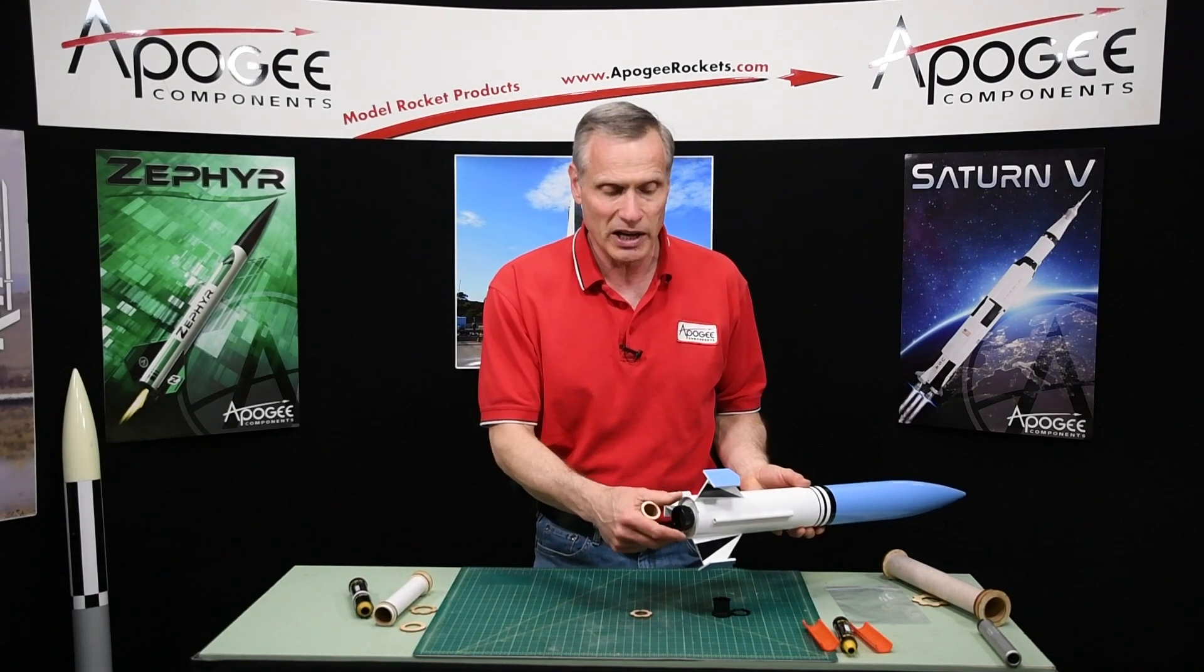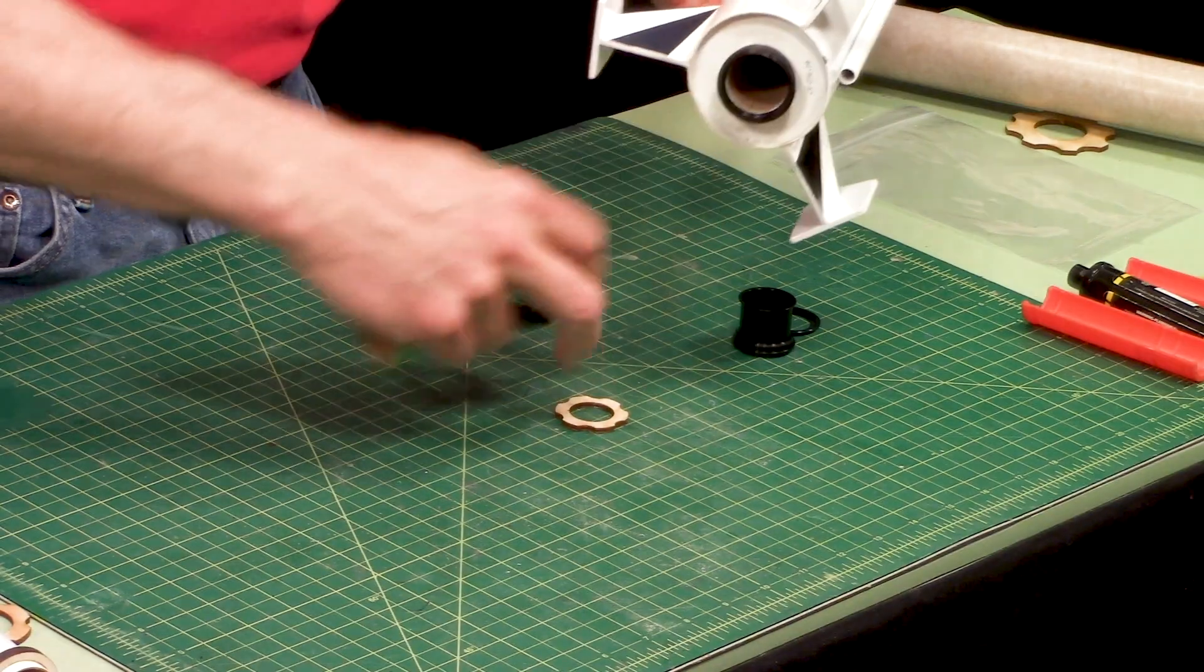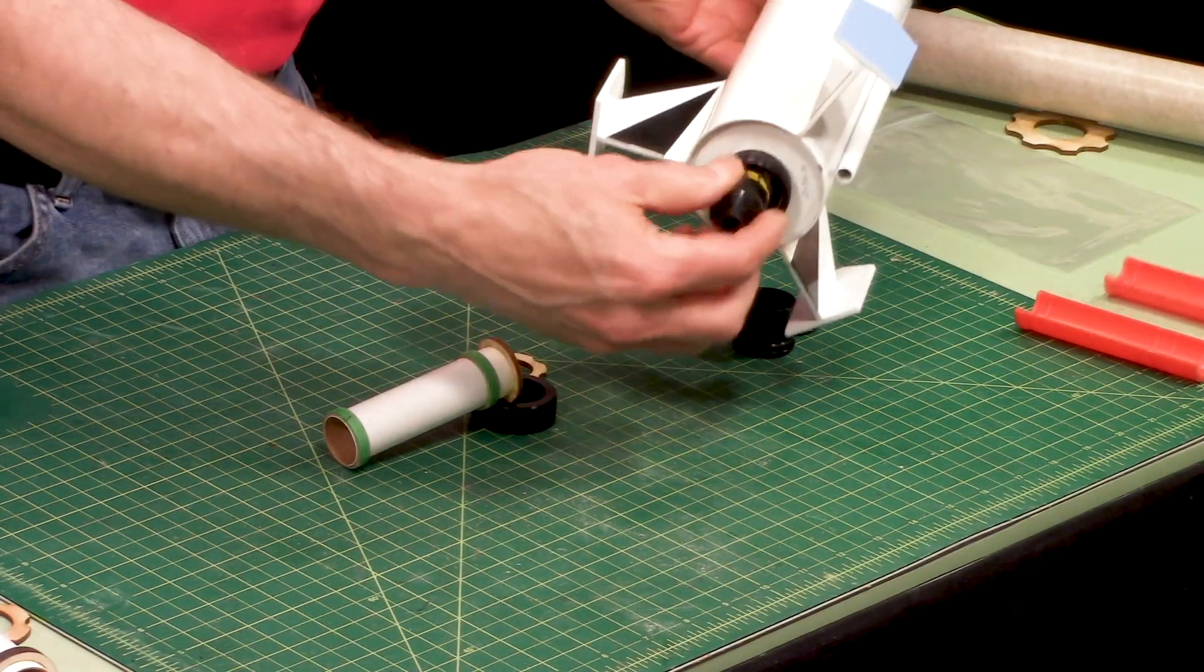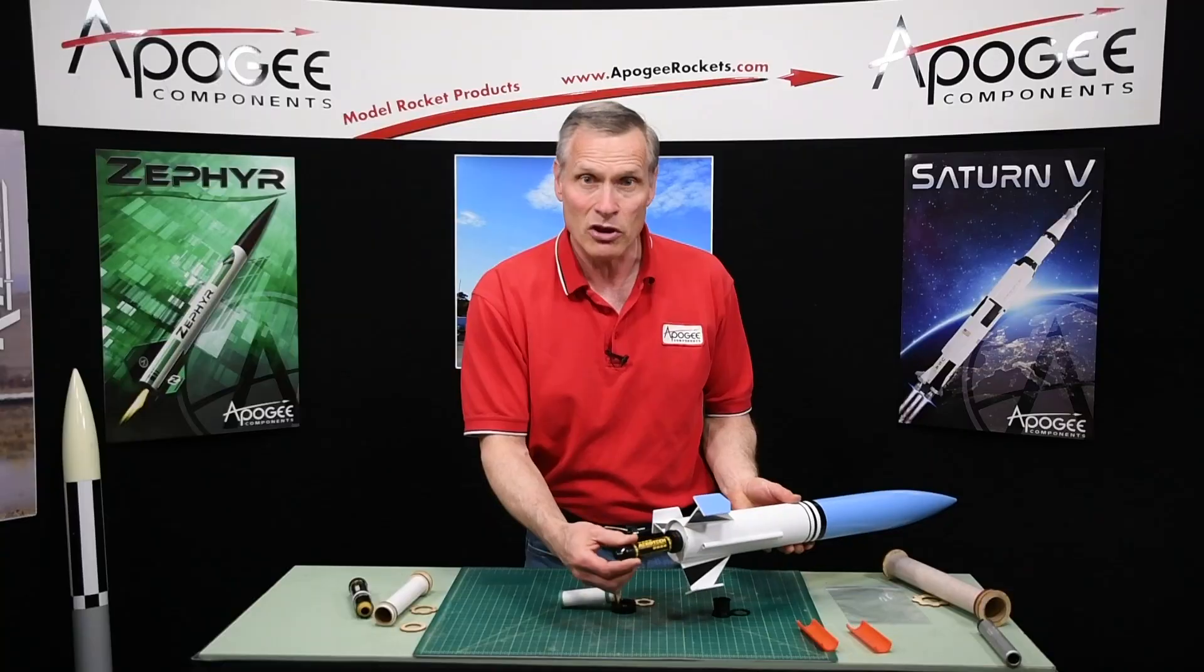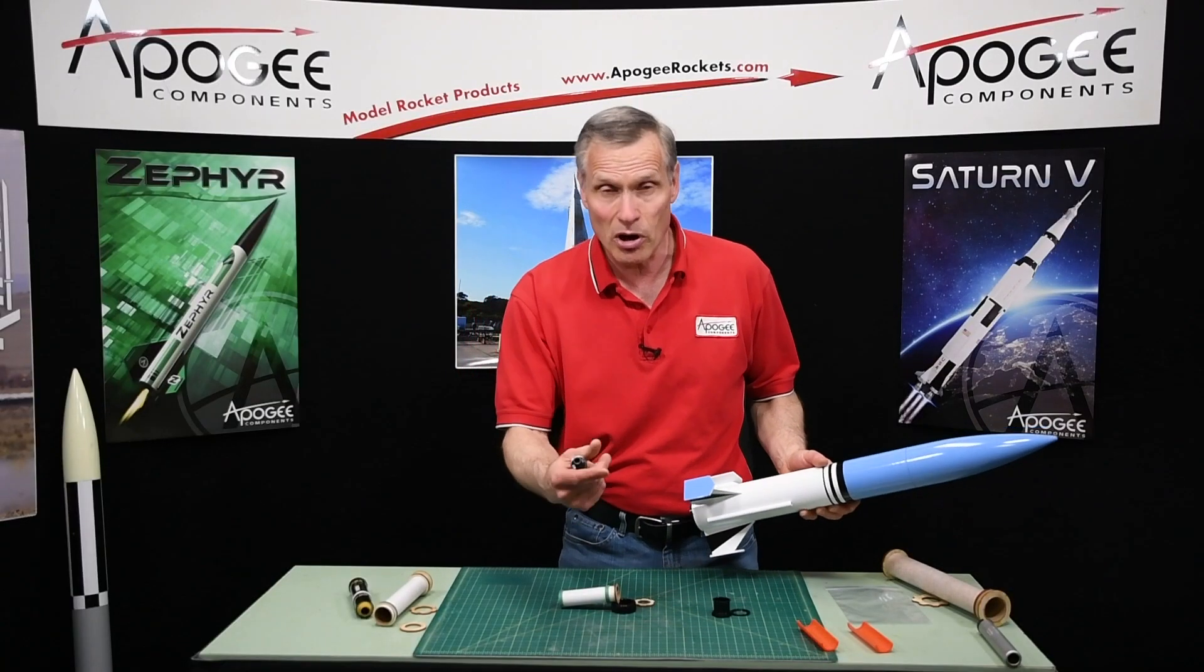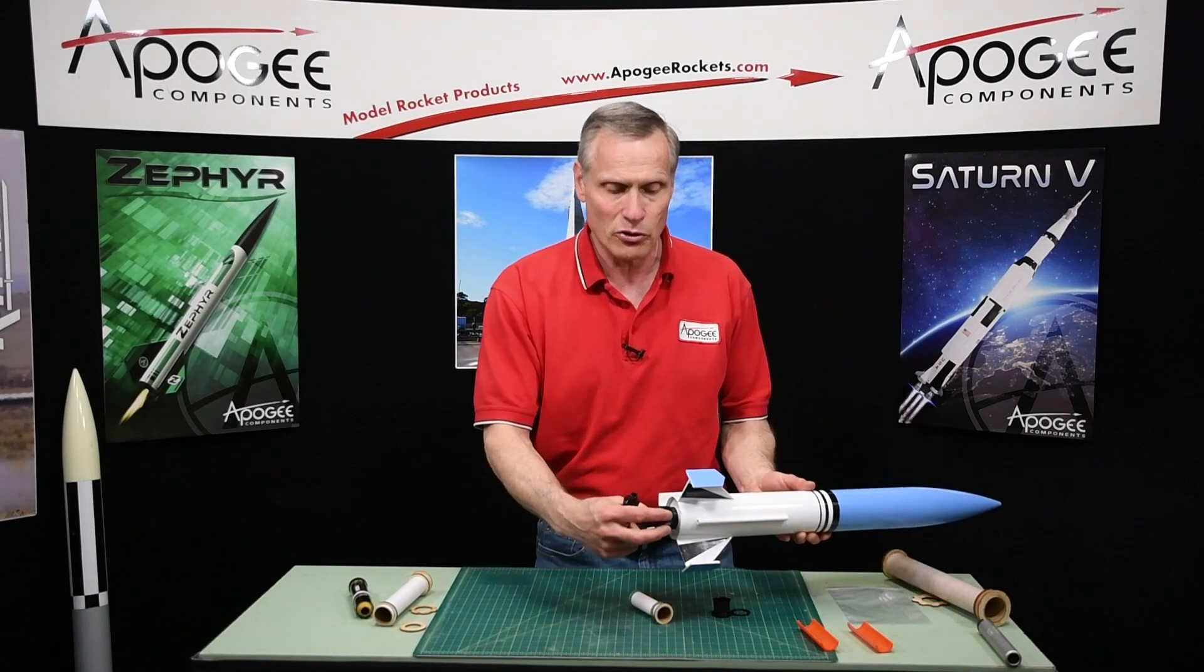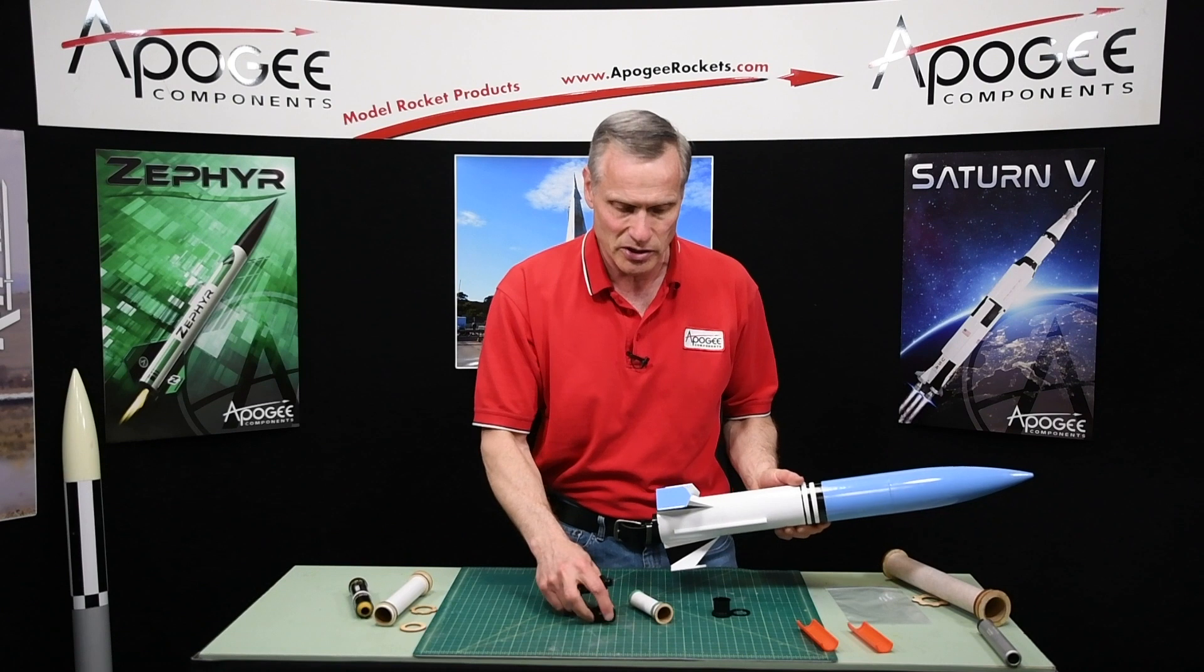For example, here is a 29 millimeter engine mount kit and say I want to fly a 24 millimeter engine. It just flops around, so I need something to center it up and hold it in place. This is designed for those kits that have a screw-on engine retainer like this.